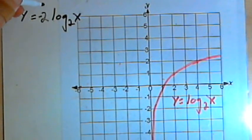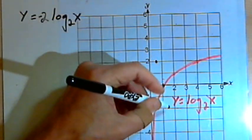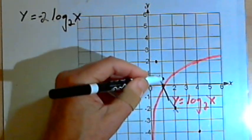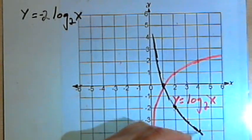reflect it across the x-axis. So it would have a graph that looks something like this, stretched and reflected.